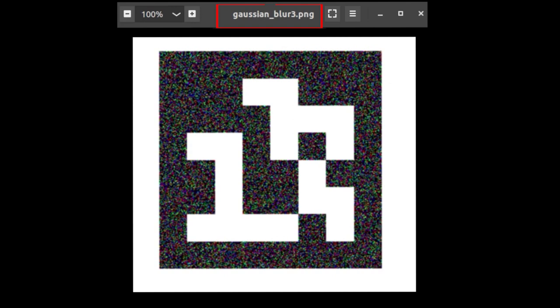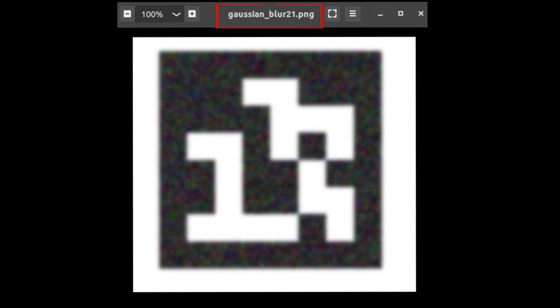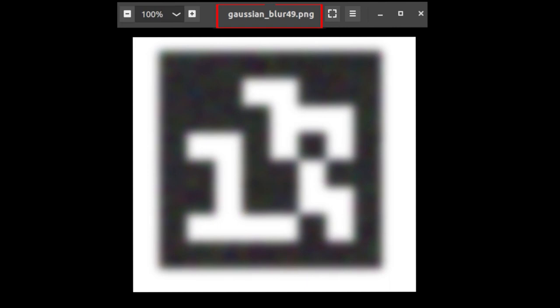If I click on the next image, this is a Gaussian blur of size 3 by 3, and as I go on increasing, so this is for 7 by 7 Gaussian, you see the noise is reducing but you are also losing the sharpness.